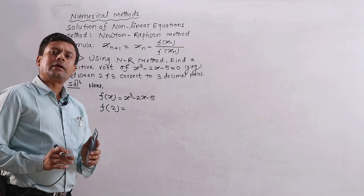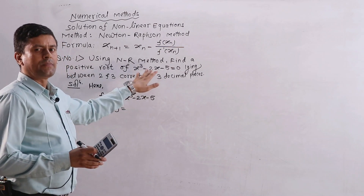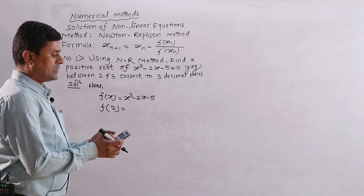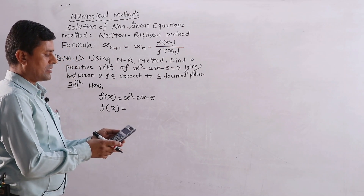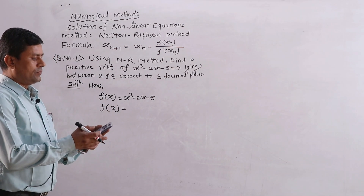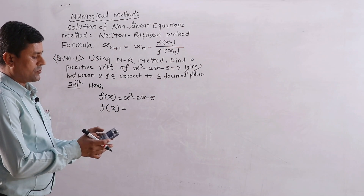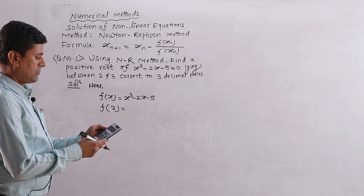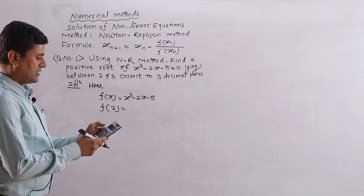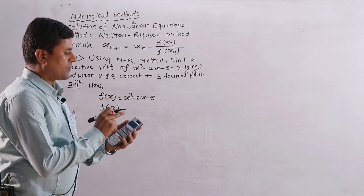Set the calculator to radian mode. For a trigonometric equation, use radian mode — press Shift, then Mode to set radian. Now type the equation: x³ − 2x − 5.